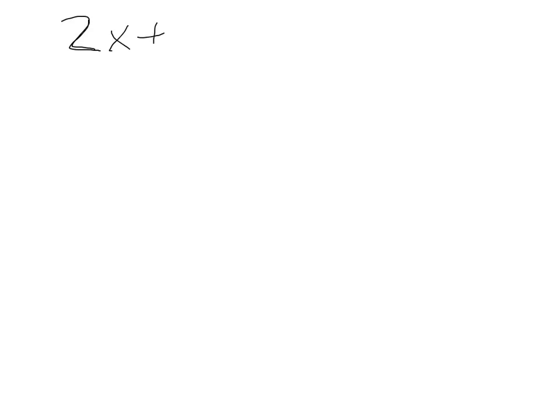So if I just write down this equation — let's say 2x plus 5 equals 3 — I'm fairly confident that you can solve this problem. We'll just go ahead and subtract 5 from each side.